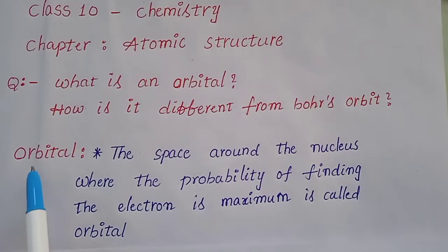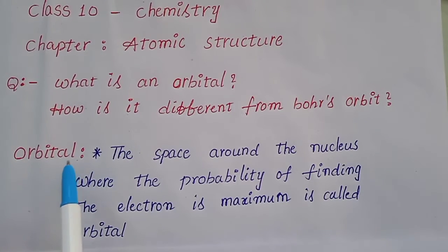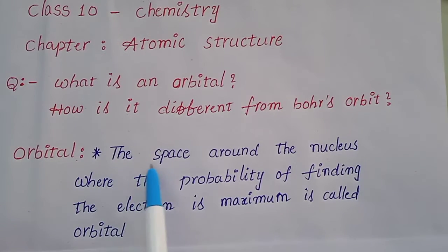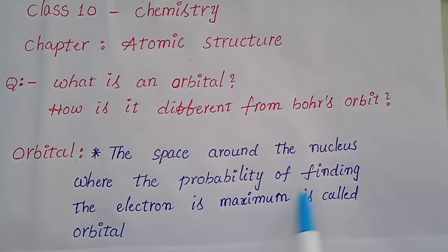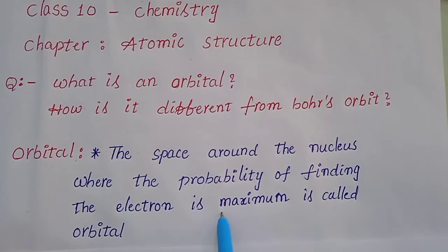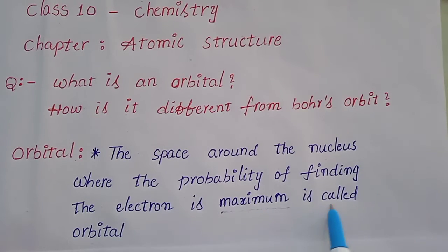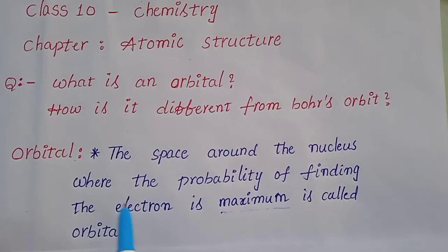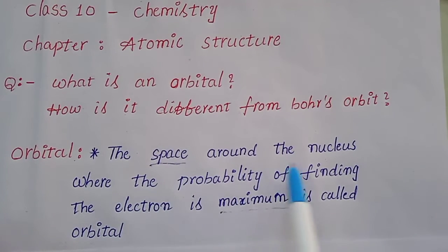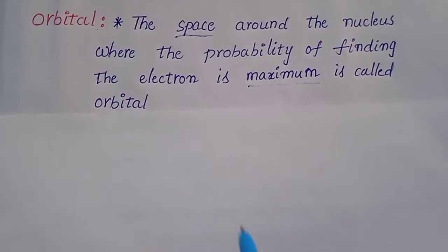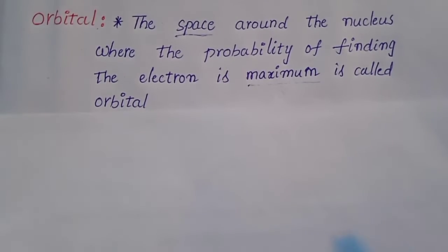The space around the nucleus where the probability of finding the electron is maximum — it is called an orbital. So orbital means it is nothing but a space around the nucleus.